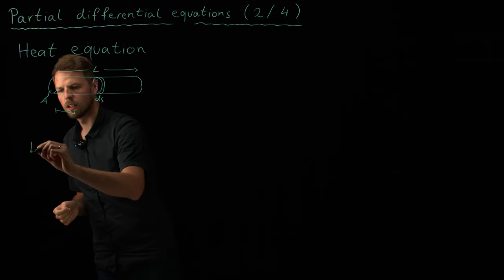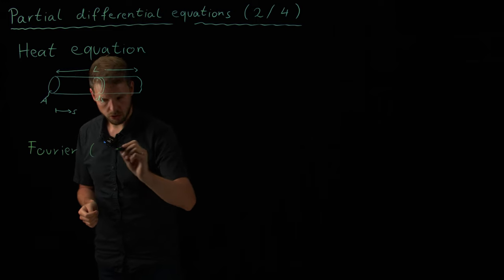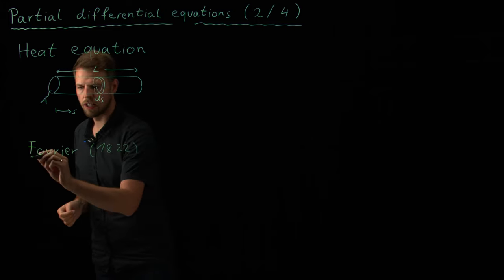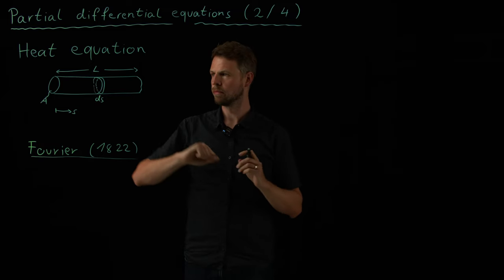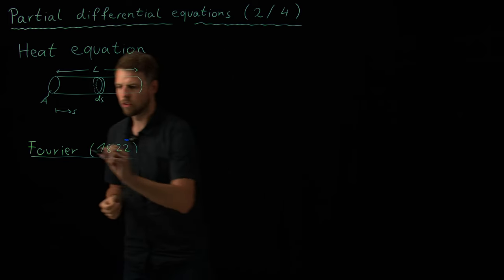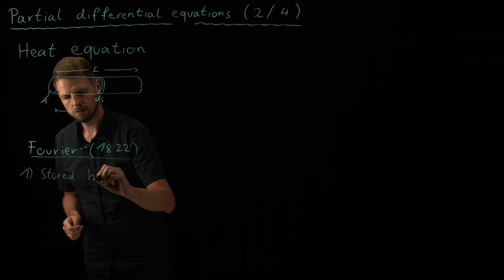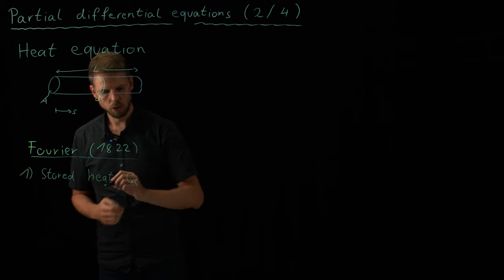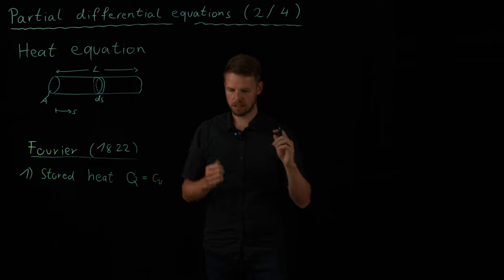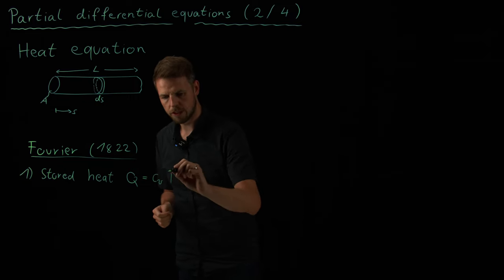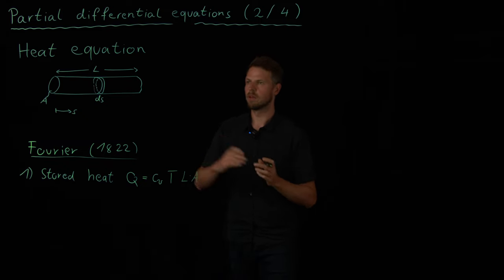And before we can get there, let's go back to Fourier roughly 200 years in 1822. He postulated that the amount of heat stored in a body, let's say this cylinder, is proportional to the temperature. So what was postulated is that the amount of stored heat, which we denote by Q, is proportional to, we have a proportionality constant, which is the heat capacity storage, times the temperature, times the volume of our body. So this is L times A, right? Length times the area of a cross section.